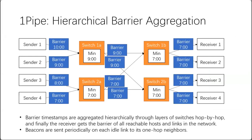Barrier timestamps are aggregated through layers of switches hop by hop. For example, switch1a computes the minimum barrier of senders 1 and 2 and broadcasts it to switch1b and switch2b. Those switches also receive the minimum barrier from senders 3 and 4, so switch1b and 2b have the barrier of all 4 senders. Each receiver gets the barrier of all reachable hosts and links in the network. A receiver can deliver messages in its receive buffer when it receives a barrier timestamp higher than or equal to the message timestamp. Periodic beacons prevent idle links from stalling the entire network.